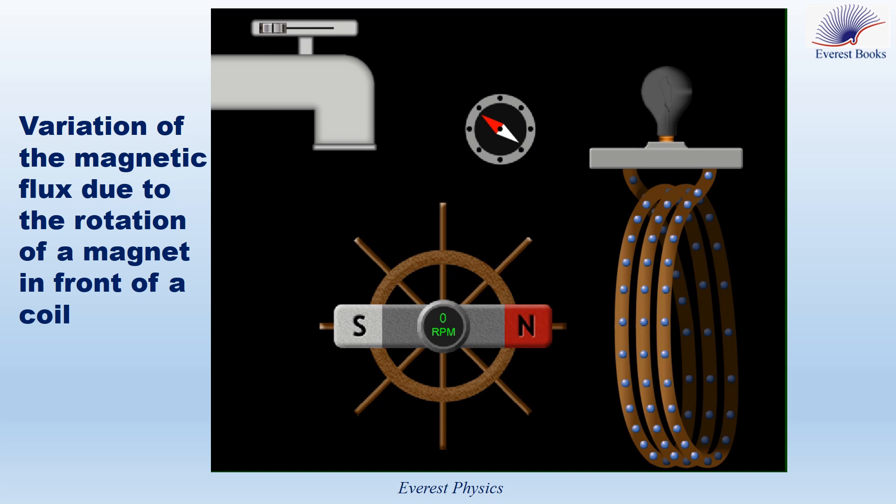This animation is about the variation of the magnetic flux due to the rotation of a magnet in front of a coil. We have a coil connected to a lamp and a moving magnet in front of the coil.